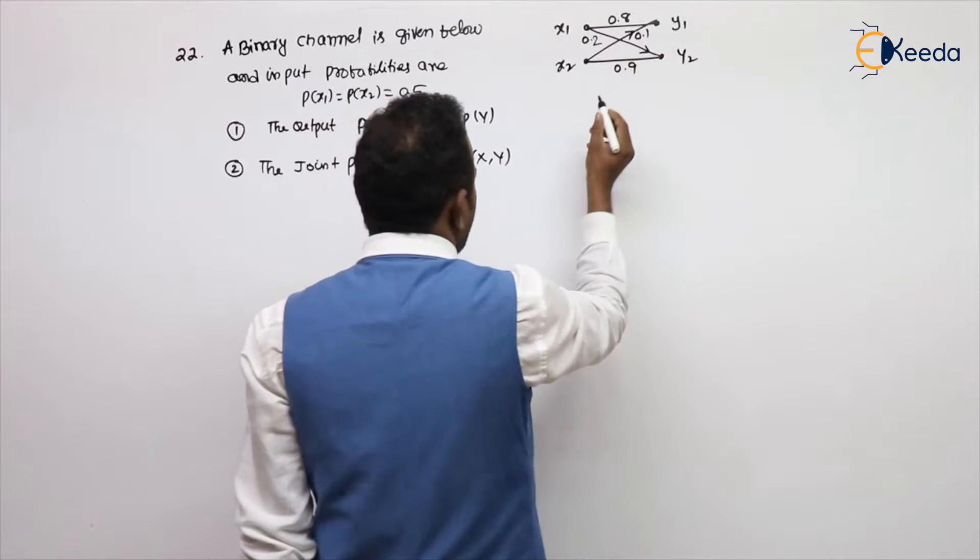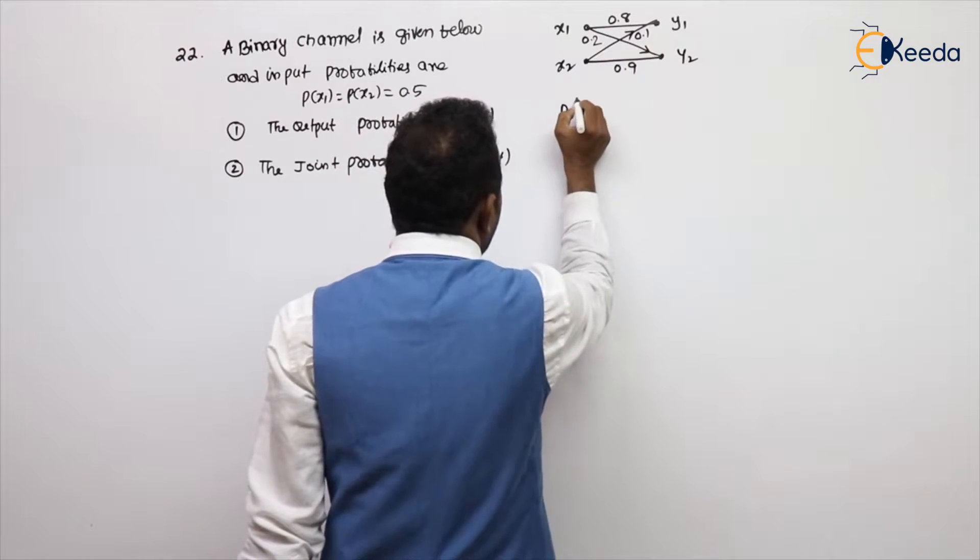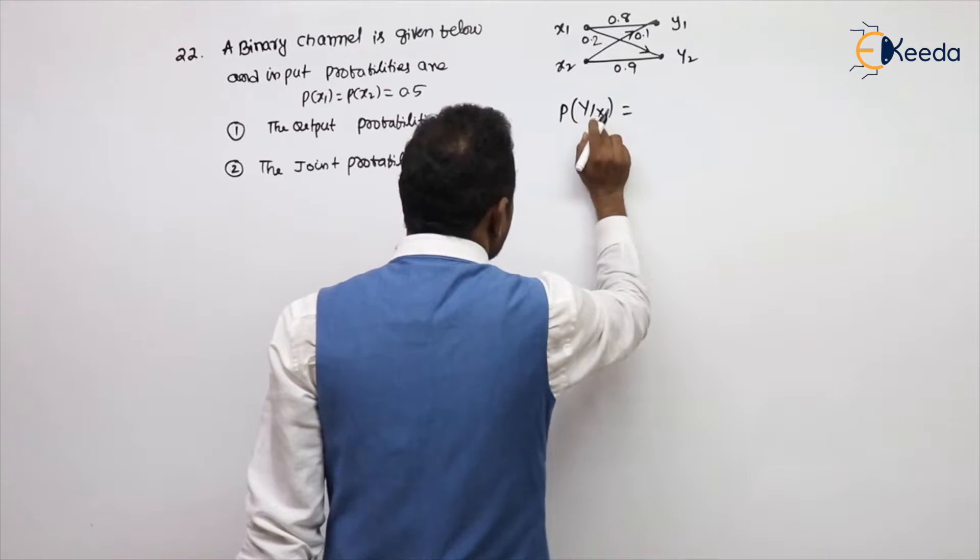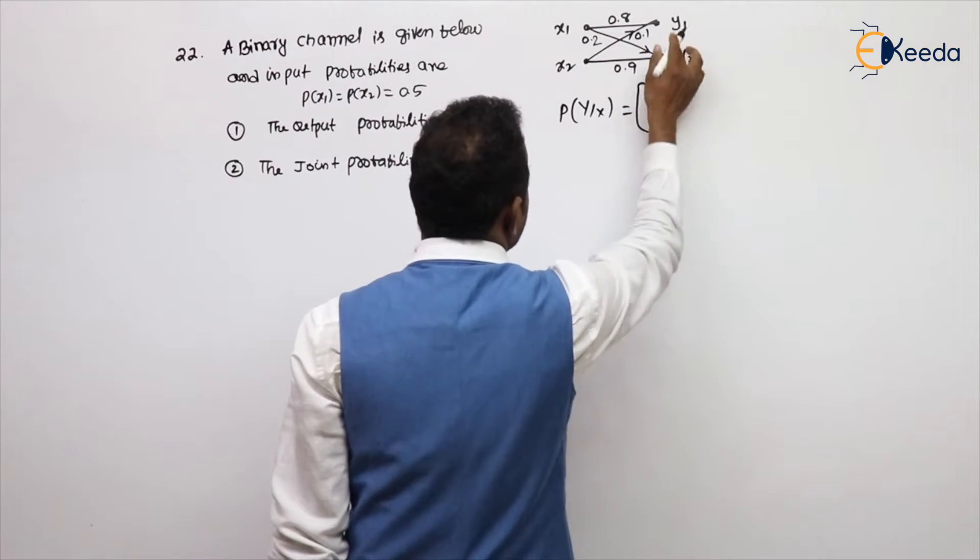If this is a given binary channel, then how to write the conditional probability matrix, not joint, conditional probability matrix.